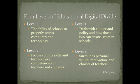According to Ball, there are four sequential levels of education digital divide that schools must address. Level 1 is all about the ability of schools to properly access computers and technology. Level 2 focuses on the skills and technological competencies of teachers and students. Level 3 deals with culture and policy and how those two can create issues in schools. Level 4 surrounds personal values, motivation, and choices of teachers. Ball believes that you cannot move from one level to the next without fully addressing the prior level.